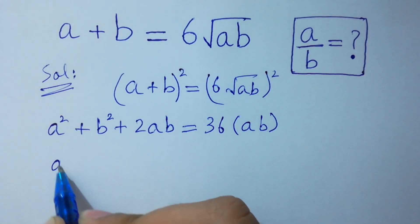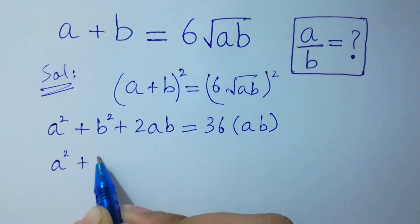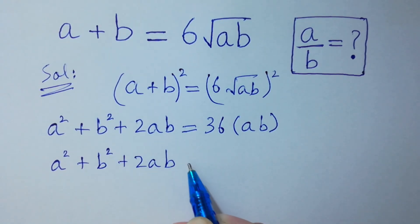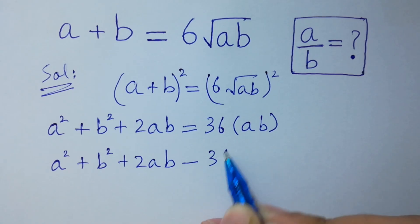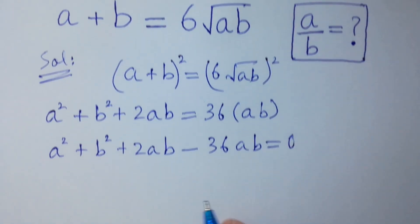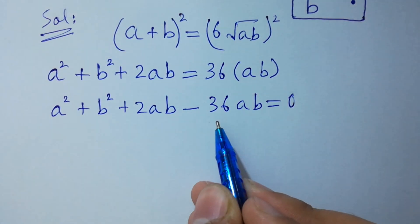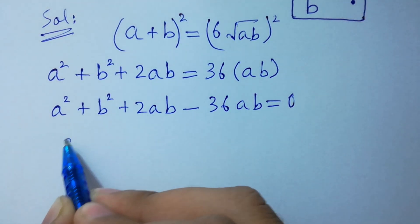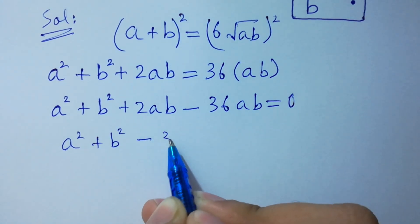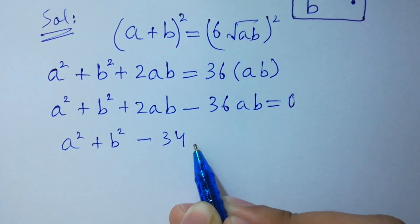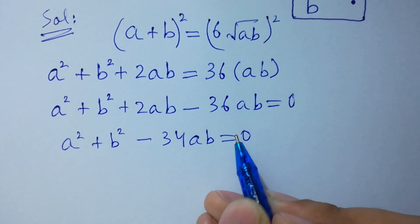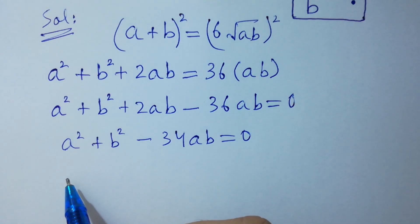So we get a squared plus b squared plus 2ab minus 36ab equal to 0. Combining like terms, 36 minus 2 gives us a squared plus b squared minus 34ab equal to 0.